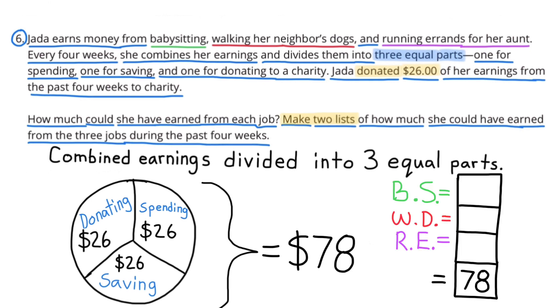Our final task is to make two lists of how much she could have earned from the three jobs during the past four weeks. We know that the total amount earned from all three of her jobs is $78. In green I have babysitting listed as B.S., walking her neighbor's dog I have in red as W.D., and running errands for her aunt I have in purple as R.E.